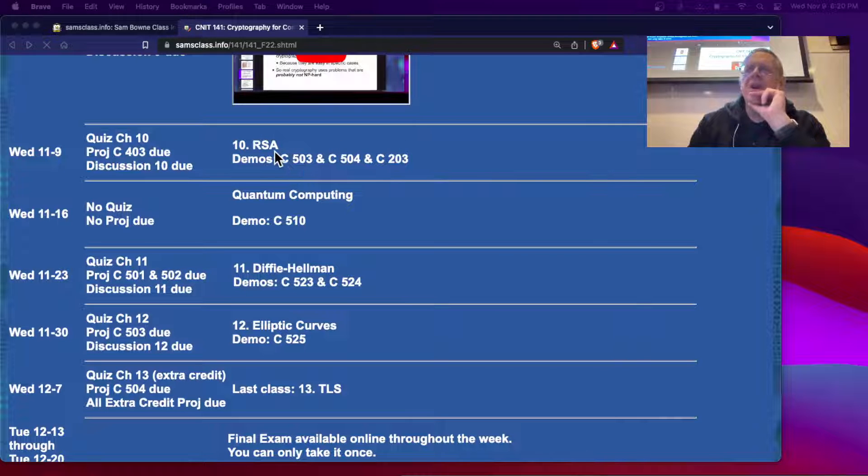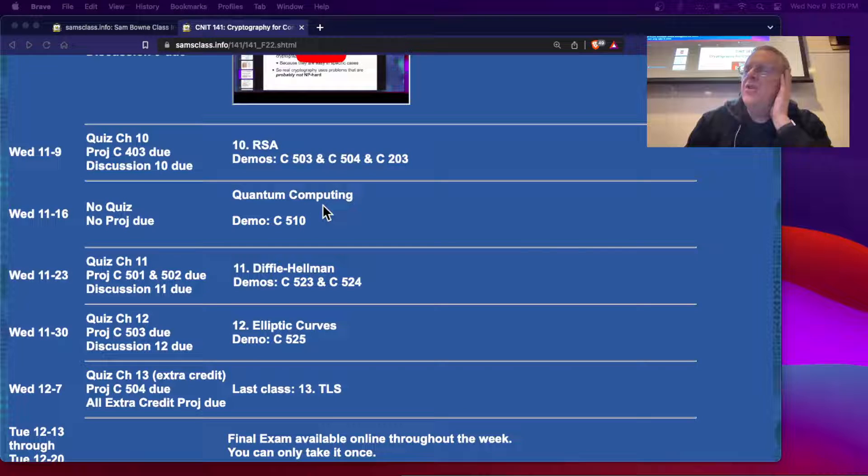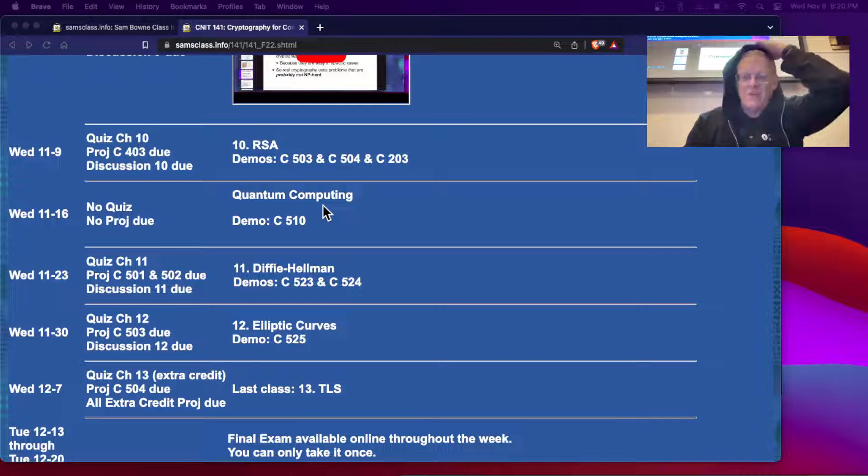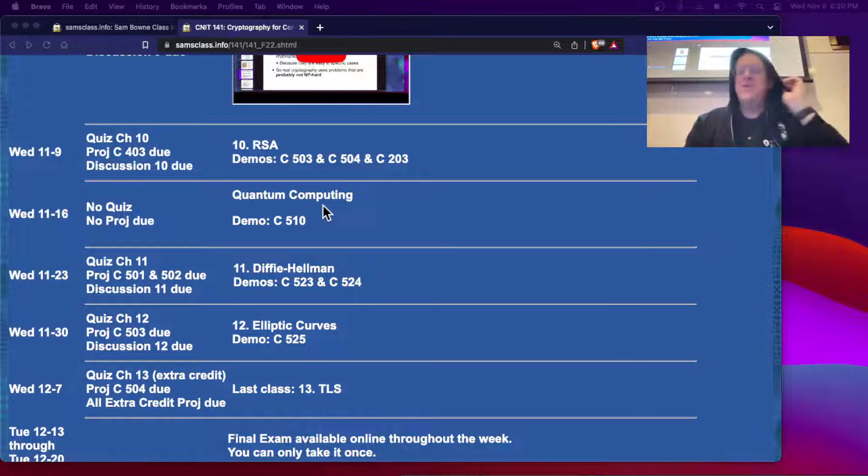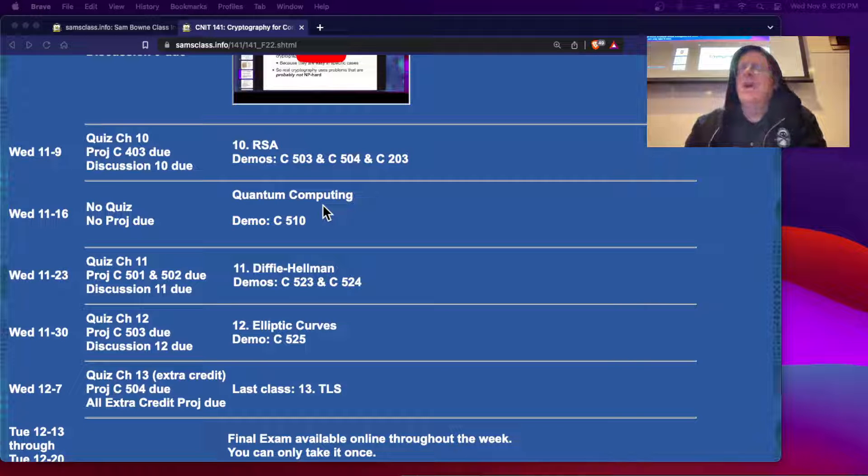This is 141, and I'm going to talk about RSA today and then demonstrate a few projects. There's only a few more classes. Next week, I'll talk about quantum computing that's not in your book and have a demonstration of a quantum computing project. I got that working today. The only trick is to install some strange Python libraries, and I found an online Python environment that works for that, which is good because it's too hard to install locally.